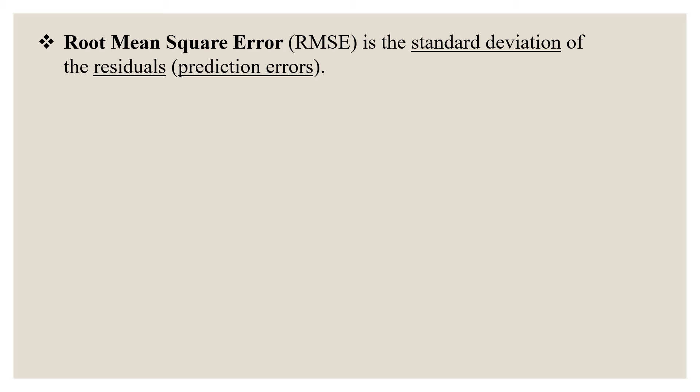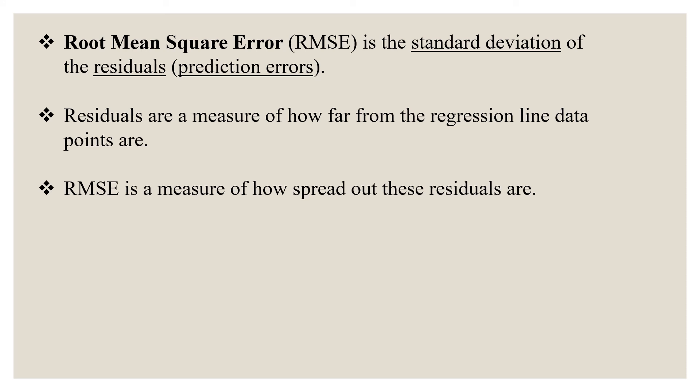The next evaluation metric is nothing but your root mean squared error. It is the standard deviation of residuals or prediction errors. Residuals are a measure of how far from the regression line data points are. RMSE is a measure of how spread out these residuals are. In other words, it tells you how concentrated the data is around the line of best fit.